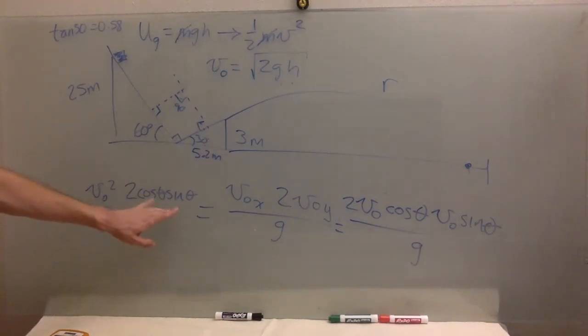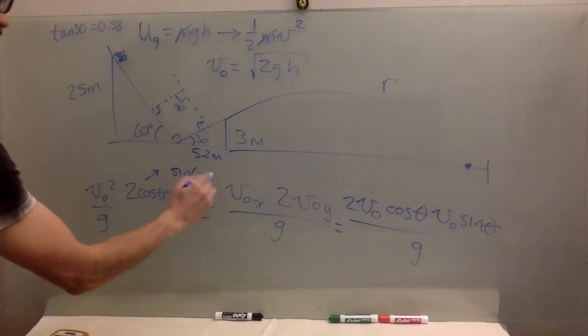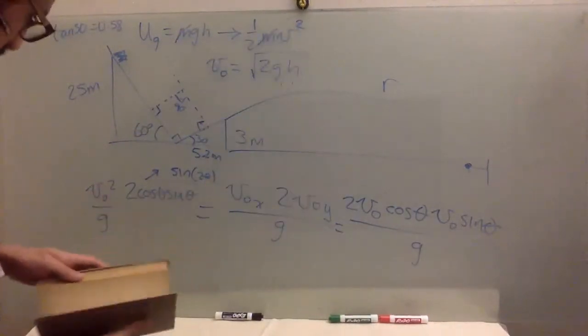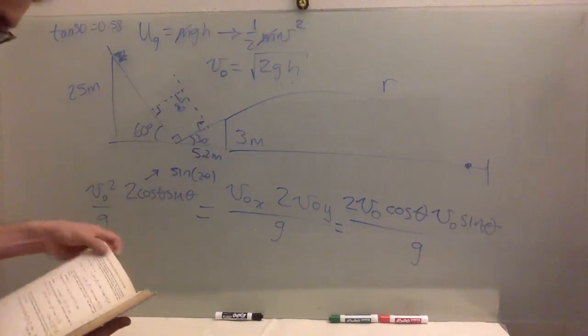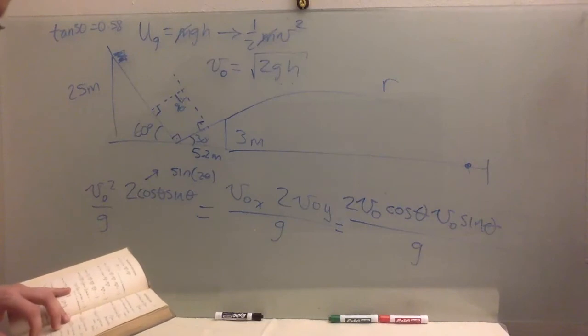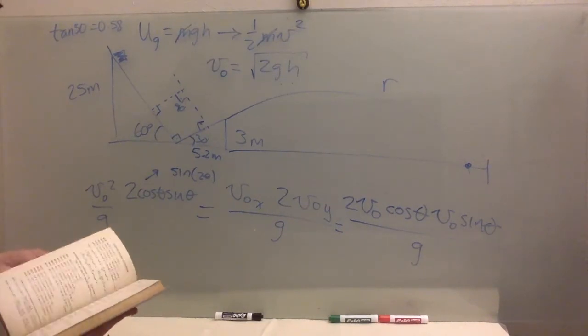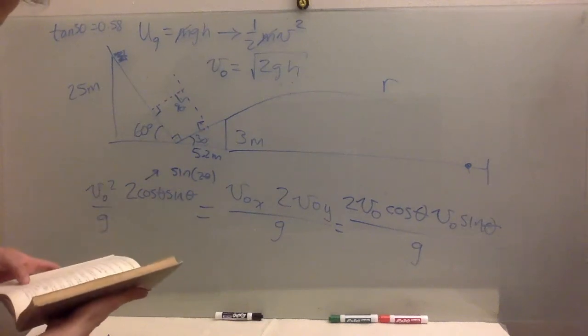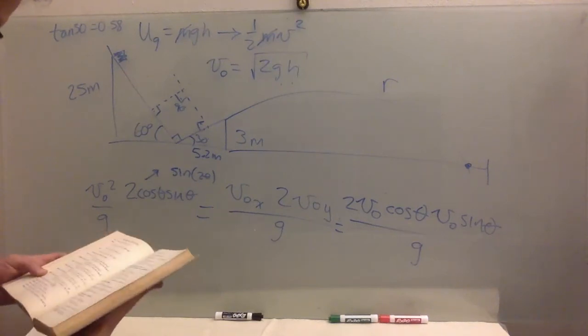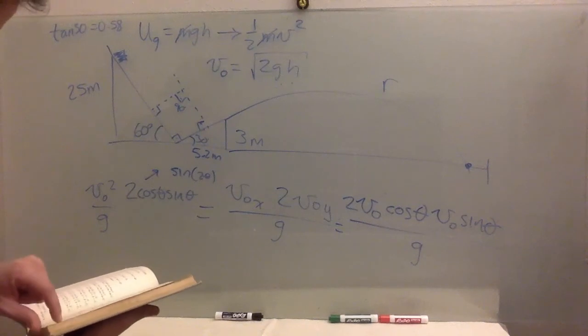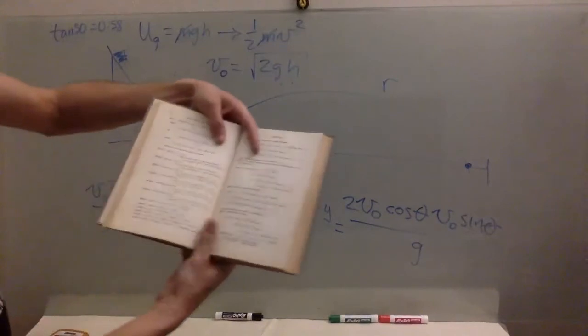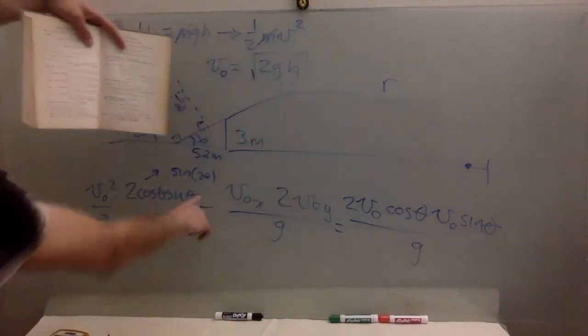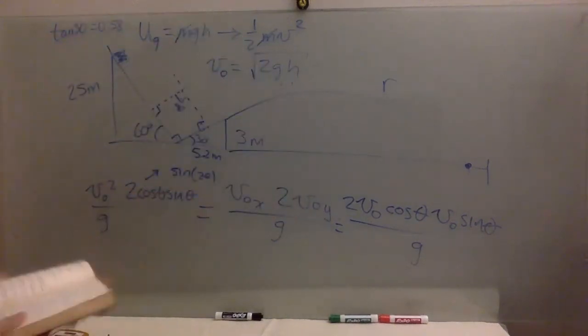Two cosine theta sine theta is equal to, this is a trigonometric identity, sine of two theta. And let me just confirm that. So this is my favorite book. It's like Mathematica in the fifties. Right? So two sine a cosine a, which is what we have over here, equals sine of two a. So sine of two theta. Good.